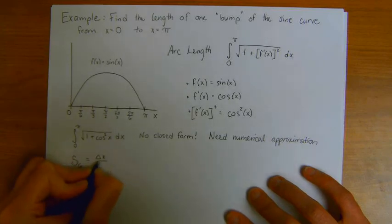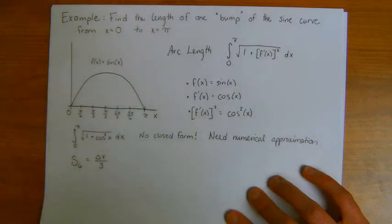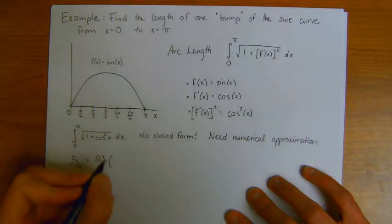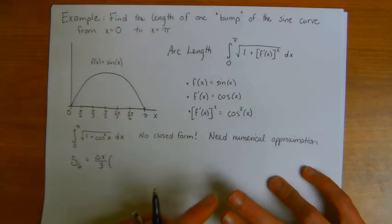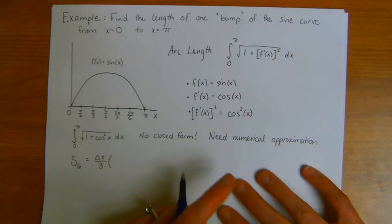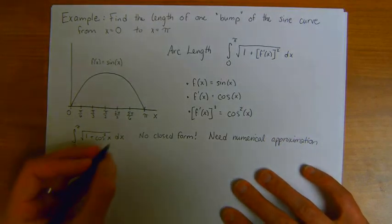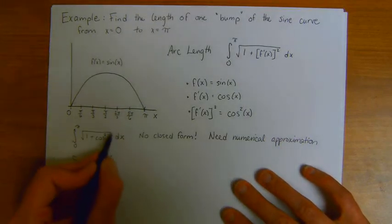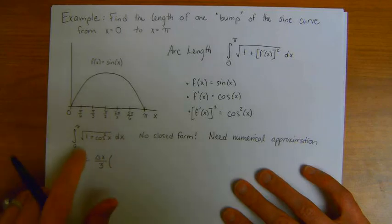And remember that Simpson's rule is sort of that average of three things. It's delta x divided by 3, and then it follows that 1, 4, 2, 4, 2, 4, 1 pattern.